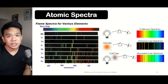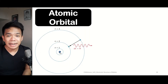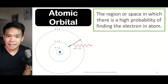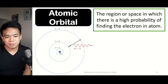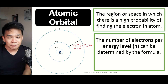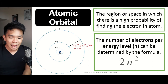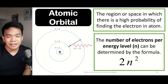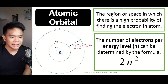The main highlight of the planetary model of the atom by Niels Bohr is the atomic orbital, which refers to the region or space in which there is a high probability of finding an electron. The number of electrons per energy level can be determined using the formula 2n², where n symbolizes the energy level.